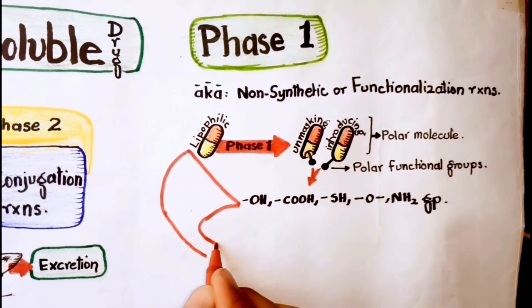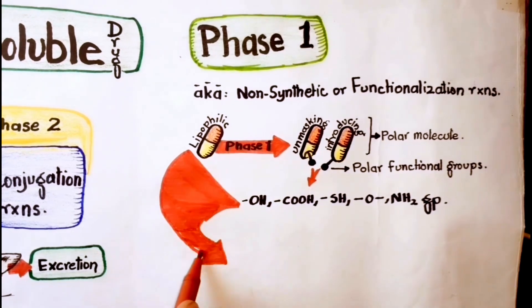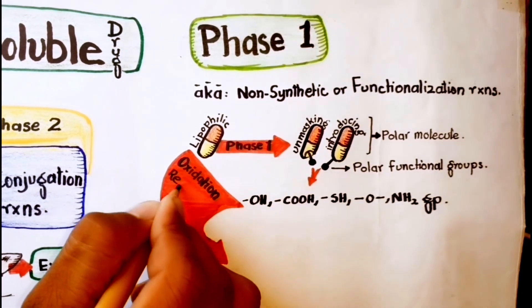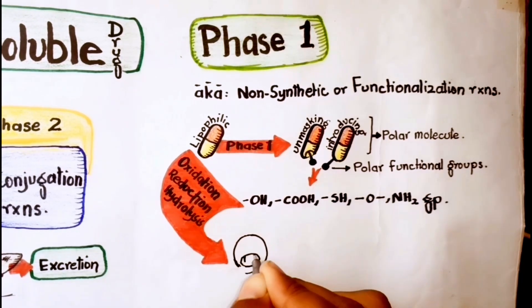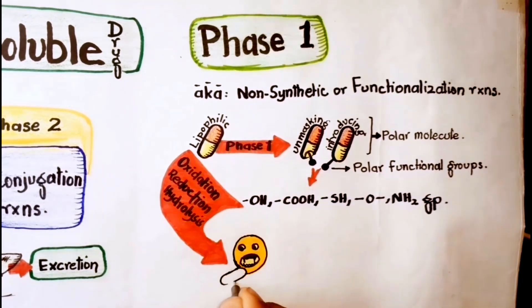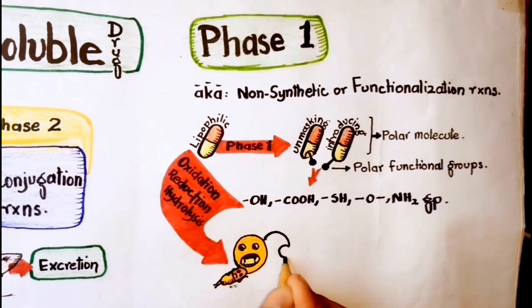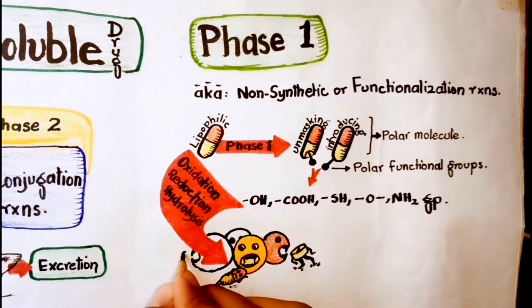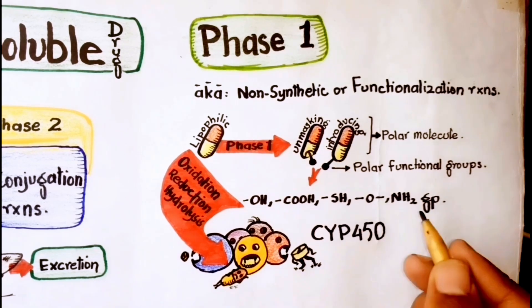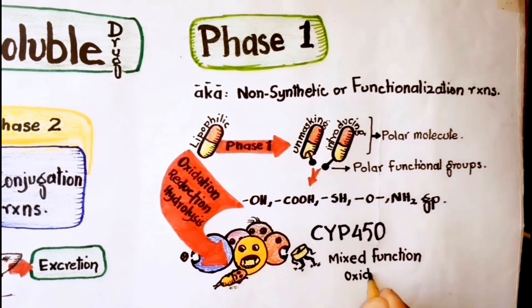Phase 1 reactions usually involve oxidation, reduction, or hydrolysis. A major enzyme system that catalyzes phase 1 type drug metabolism reactions is the microsomal cytochrome P450 mixed function oxidase system.